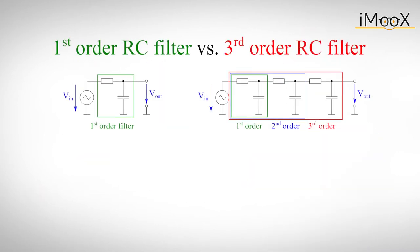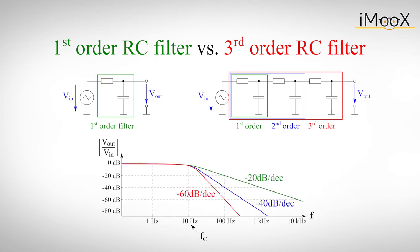To increase the slope of attenuation of this circuit, we can simply daisy-chain a few first-order RC filters. Every additional capacitor increases the so-called order of the filter. Three RC low-passes in a row will hence give us a third-order low-pass filter. Every stage of the filter will increase the slope of attenuation above the corner frequency by minus 20 dB per decade.